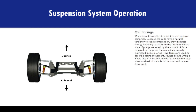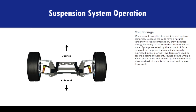When weight is applied to a vehicle, coil springs compress. Because the coils have a natural tendency to resist compression, they dissipate energy by trying to return to their uncompressed state. Springs are rated by the amount of force required to compress them one inch, usually expressed in pounds per square inch, or PSI. Two terms are used to describe spring movement: jounce occurs when a wheel hits a bump and moves up, and rebound occurs when a wheel hits a hole in the road and moves downward.